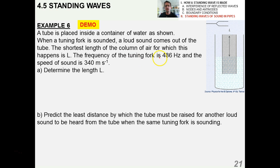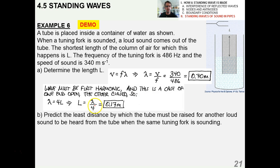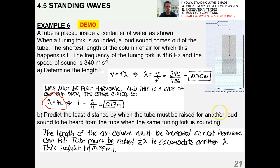The shortest length of the column of air for which this happens is L — that's the fundamental frequency. The frequency of the tuning fork is 486 Hz and the speed of sound is 340 m/s. Using the wave equation, lambda is 0.7 meters. The wave must be the first harmonic, and this is a case of one end open and the other closed, so the boundary conditions dictate lambda equals 4L. L is one quarter of a wavelength, which is about 17 centimeters. To predict the least distance by which the tube must be raised for another loud sound — the tube must be raised half a wavelength to accommodate the next harmonic, which is 35 centimeters.